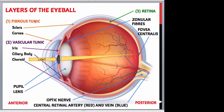The fibrous tunic is the superficial layer of the eyeball and consists of the anterior cornea and the posterior sclera. The sclera — from the Greek scleros meaning hard — is what is known as the white of the eye. It is a dense layer of connective tissue made up of collagen fibres and fibroblasts. It covers the entire eyeball with the exception of the cornea, which is transparent. Its functions include giving shape to the eye, making the eye more rigid, protecting the inner parts of the eye, and serving as a site of attachment for the extraocular or extrinsic eye muscles. The sclera is perforated posteriorly by the optic nerve, as well as the sensory motor nerves and blood vessels of the eyeball.